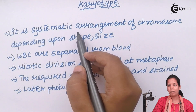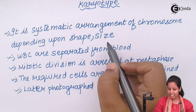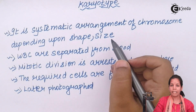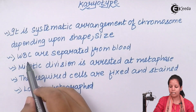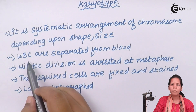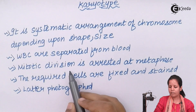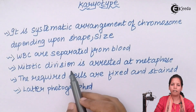Karyotyping is the systematic arrangement of chromosomes depending upon their shape and size, and there are certain steps that need to be followed. Firstly, WBCs or white blood cells are separated from blood. Next, mitotic division is arrested at metaphase, since continuously dividing cells would hinder the karyotyping process.